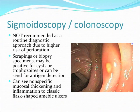You can also perform sigmoidoscopy or colonoscopy, but it's not recommended because the tissue is very inflamed and you can cause a perforation. But if it was done, what you see is a lesion called a flask-shaped amoebic ulcer. If you biopsy this, you can see the trophozoites or cysts.